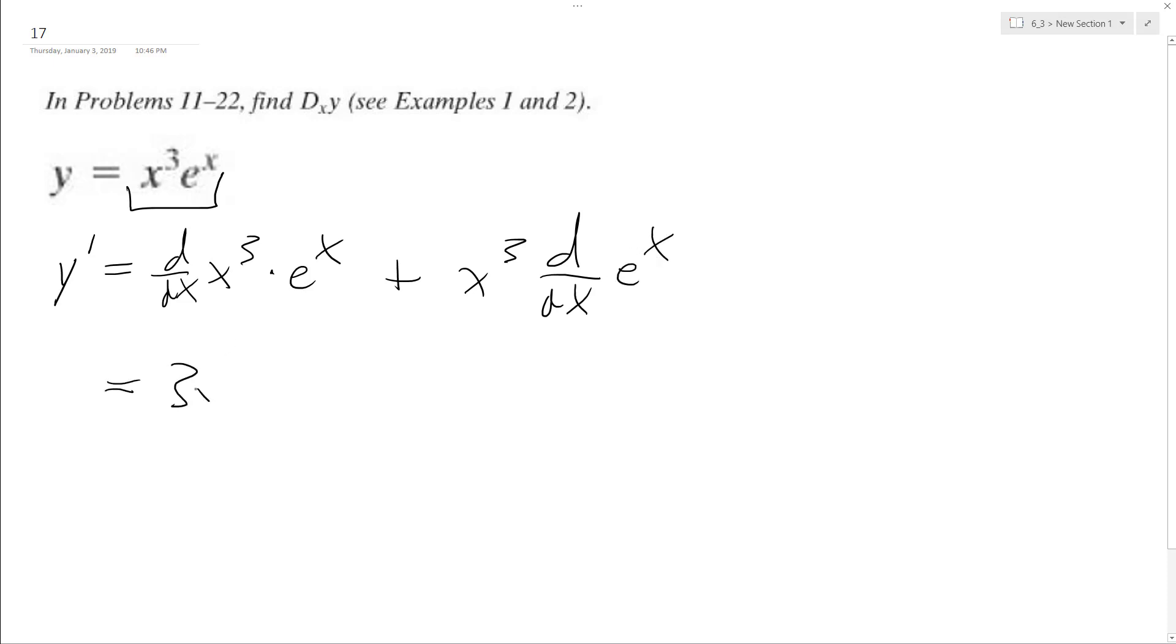So we're going to get 3x squared e raised to the x plus x cubed. And the derivative of e to the x is just, well, we pull out the x and the derivative of x is just 1. So that's just e raised to the x.